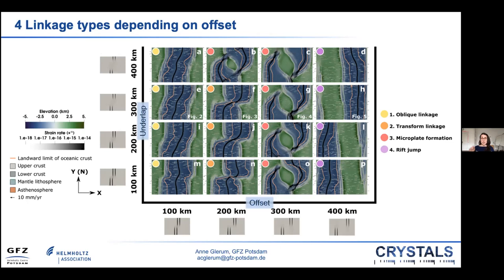One other interesting thing to note is that for a model domain that is 900 kilometers in the along-rift direction instead of 600 kilometers — otherwise unchanged — we do get a rotating microplate instead of rift failure. So in larger domains, microplates can form for offsets even larger than 400 kilometers.